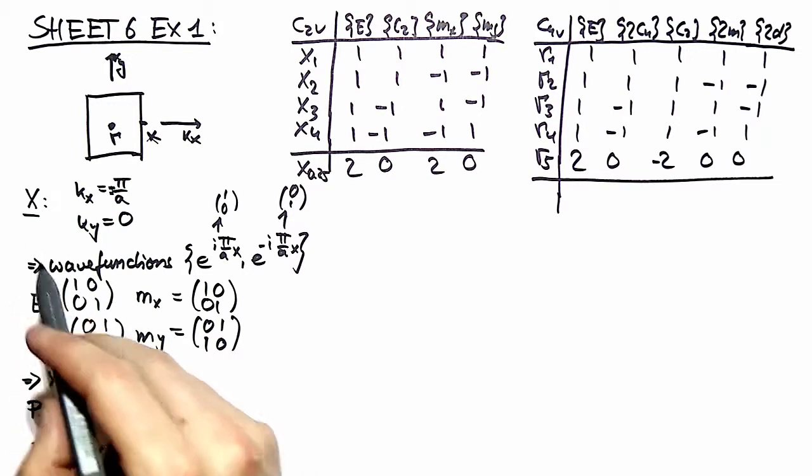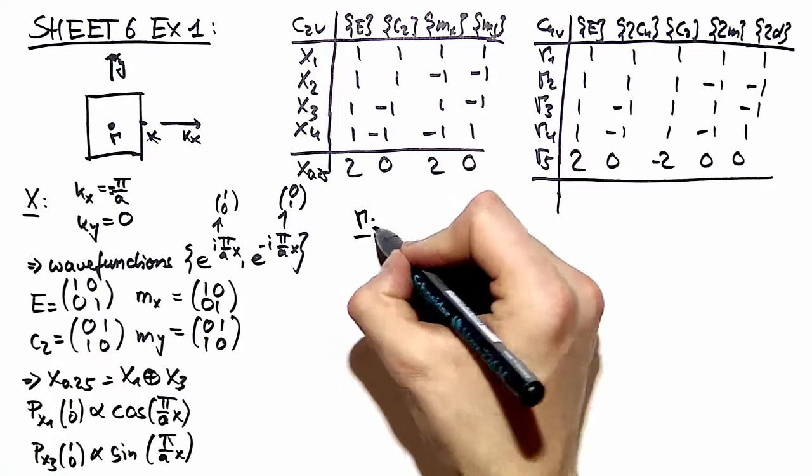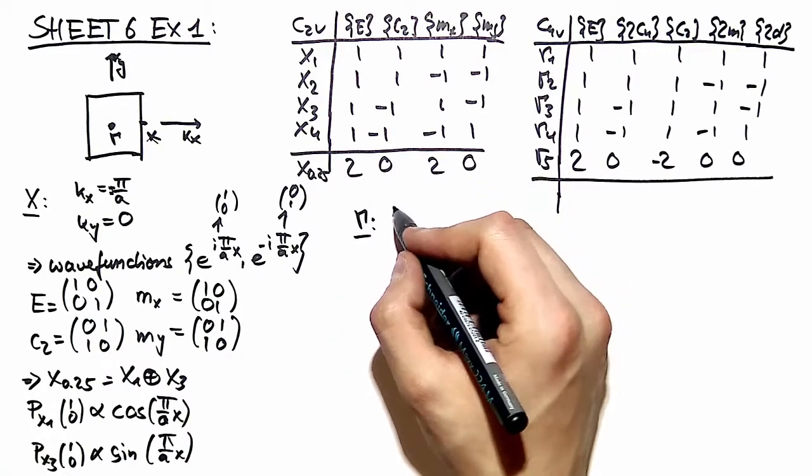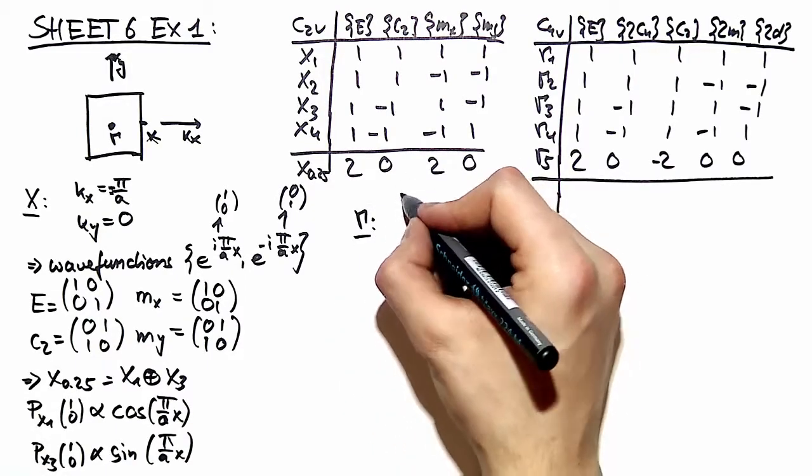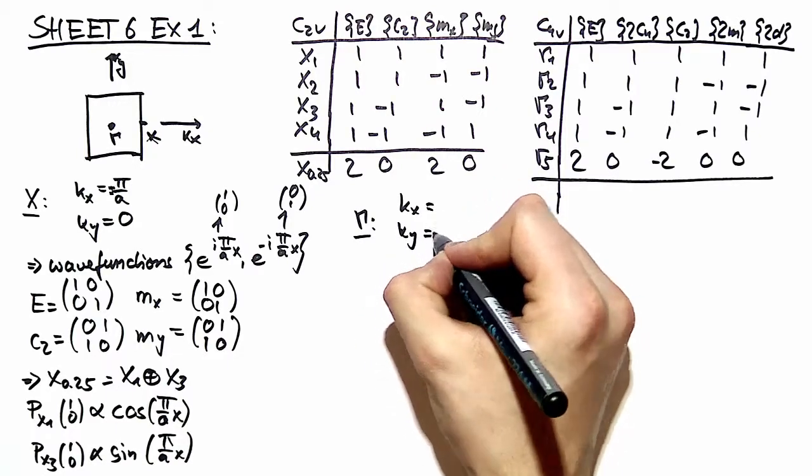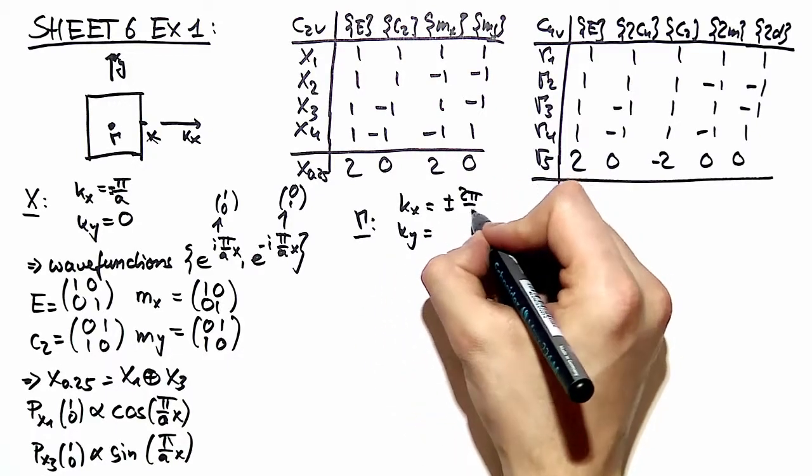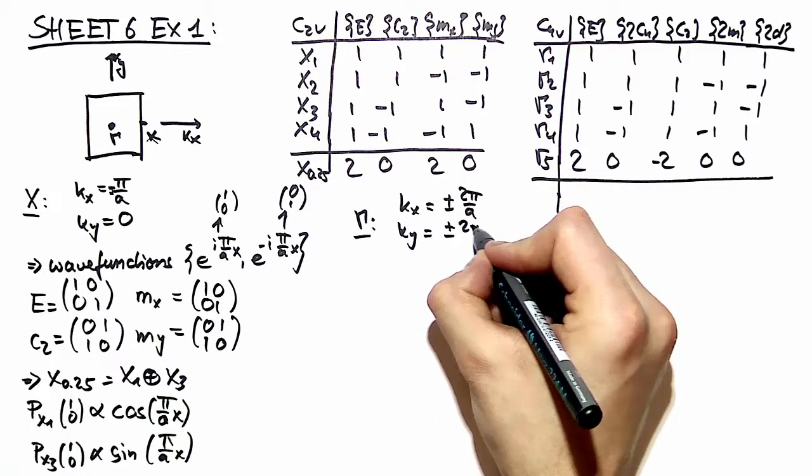So this is it for the x point. Let's move on to the gamma point. At the gamma point we can write our kx and ky as ±2π/a in both directions.